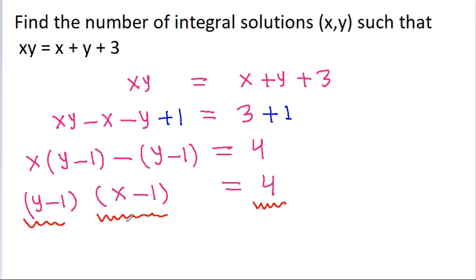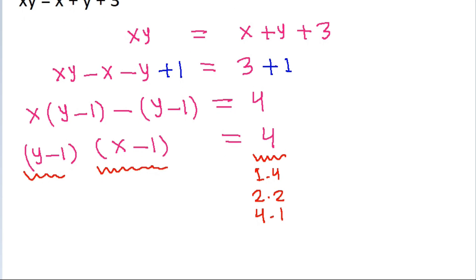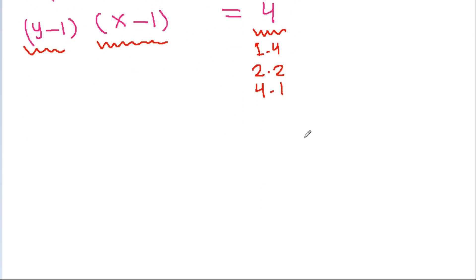4 is a product of two integers: 1 times 4, 2 times 2, 4 times 1, and minus 1 times minus 4, minus 2 times minus 2, and minus 4 times minus 1.